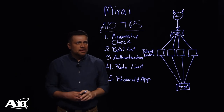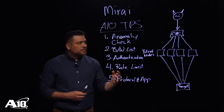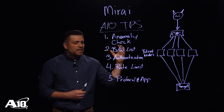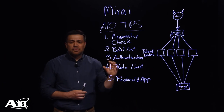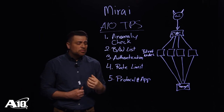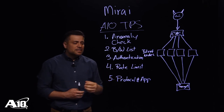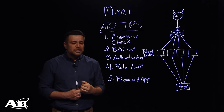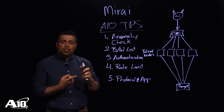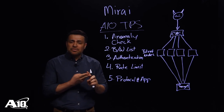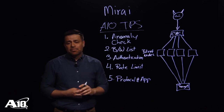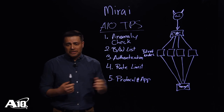Using these five methods, we can effectively mitigate the attack even if multiple types of attacks are thrown at us simultaneously. Once we identify the attack, we can apply an action to that specific traffic — we can either blacklist the attack, drop it, reset it, or authenticate it if it passes one of our authentication challenges.